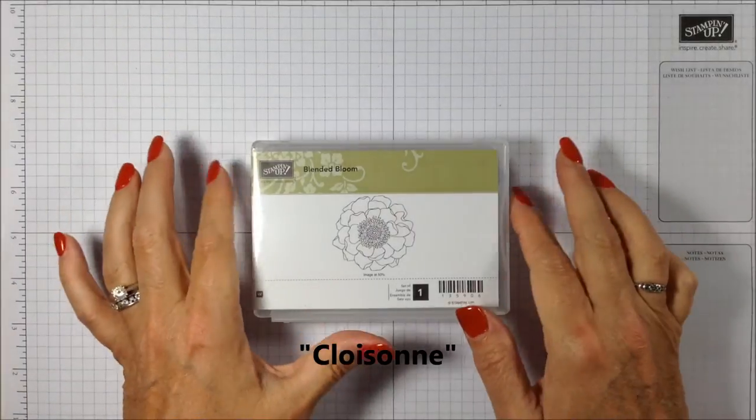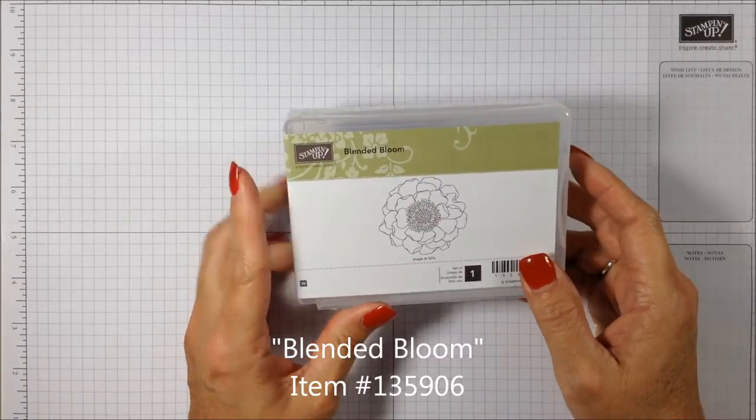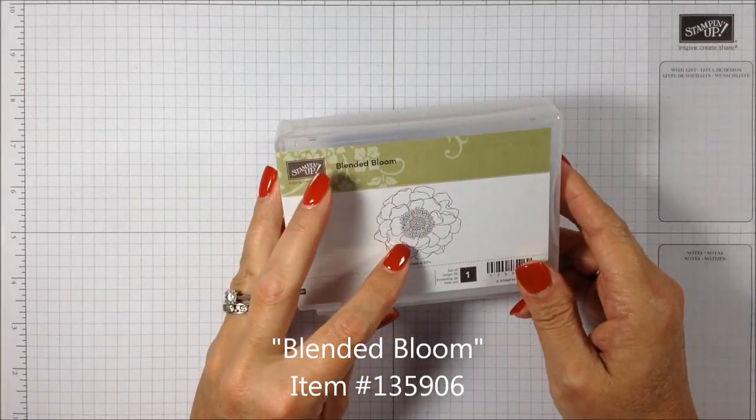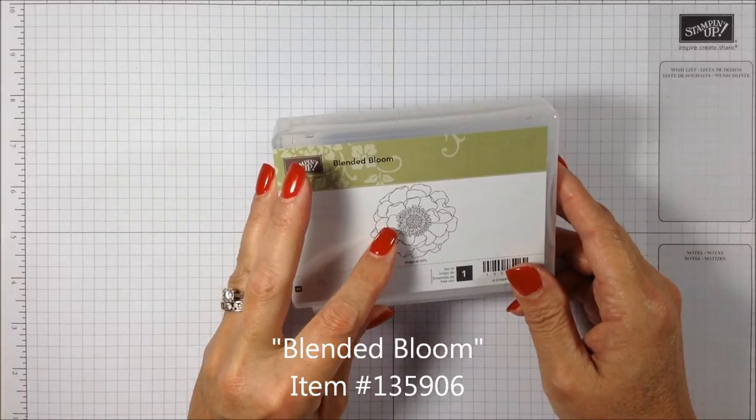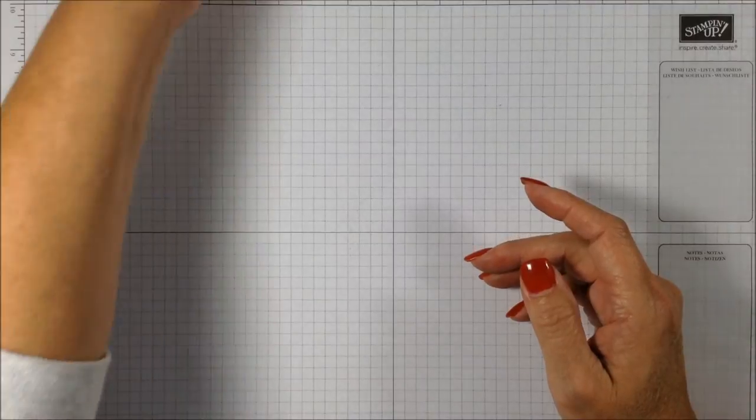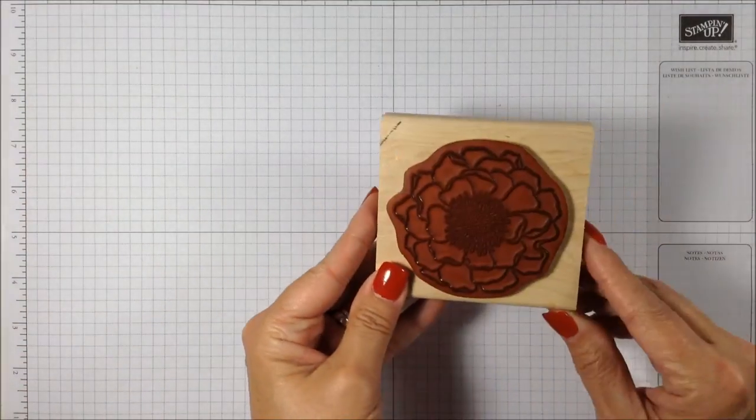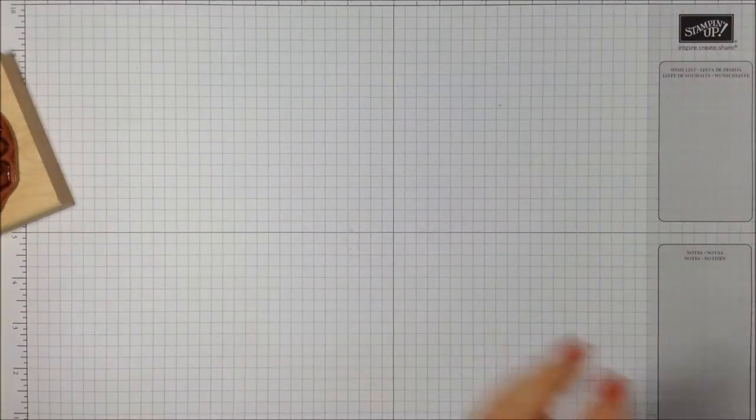We're going to start with this beautiful Blended Bloom stamp, single image. For this technique we'd like to use something with some nice open areas so we'll take advantage of the colors in the papers that we choose. I have my Blended Bloom stamp and before I can use it I need to use something that I also love, which is magazines.